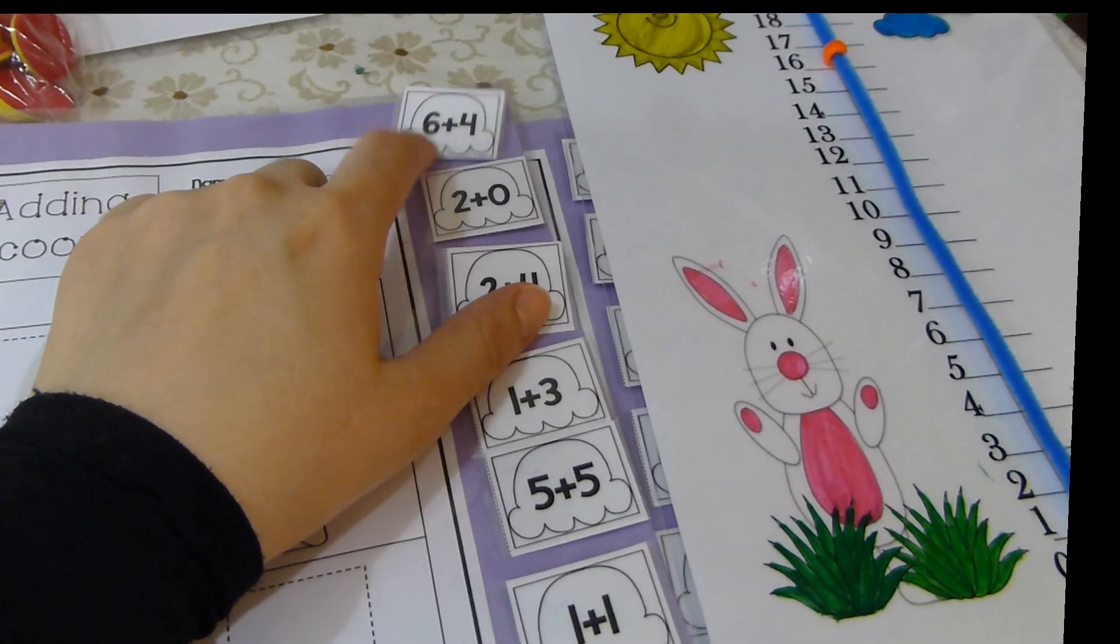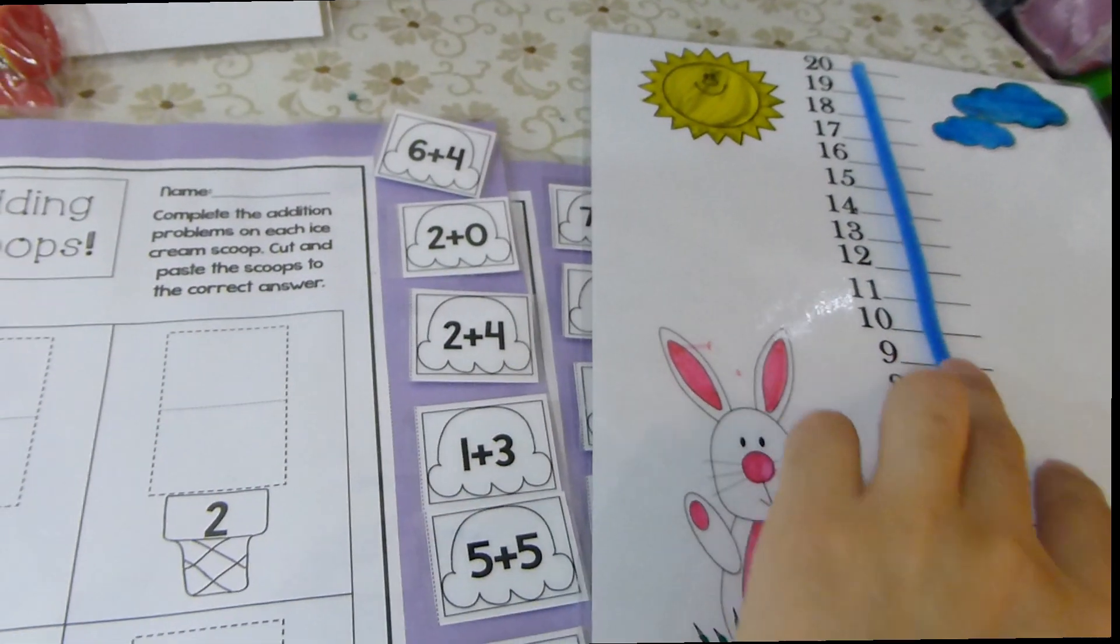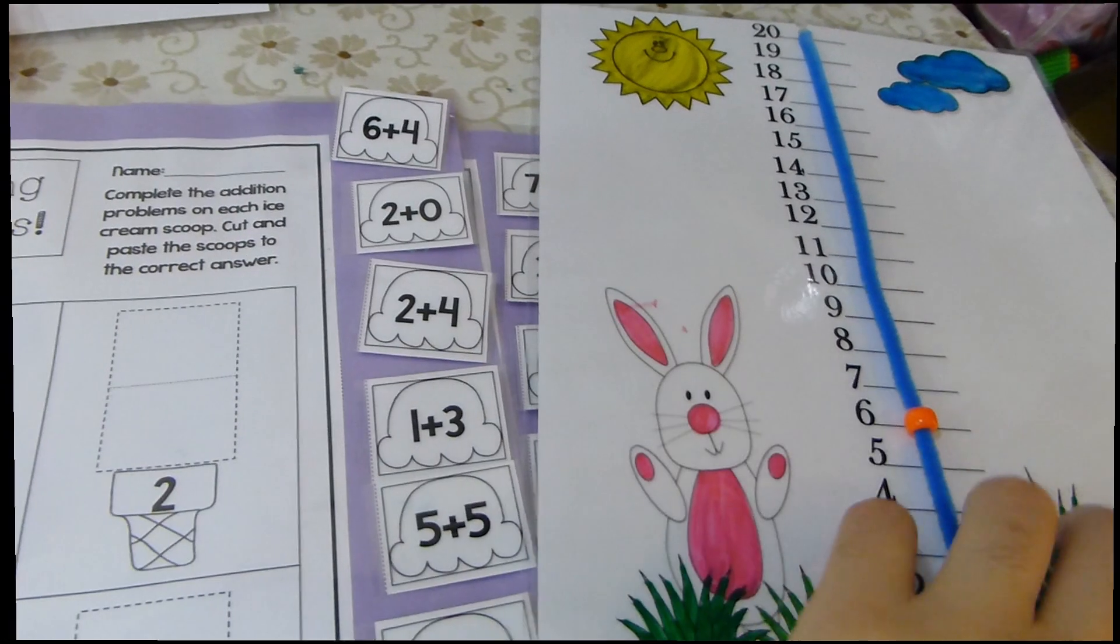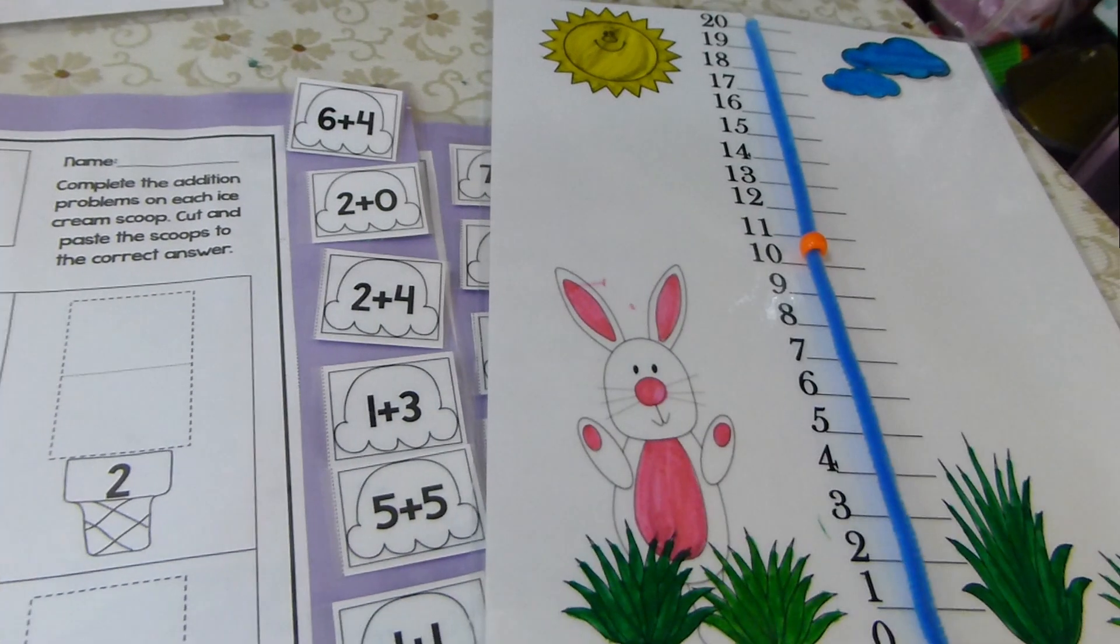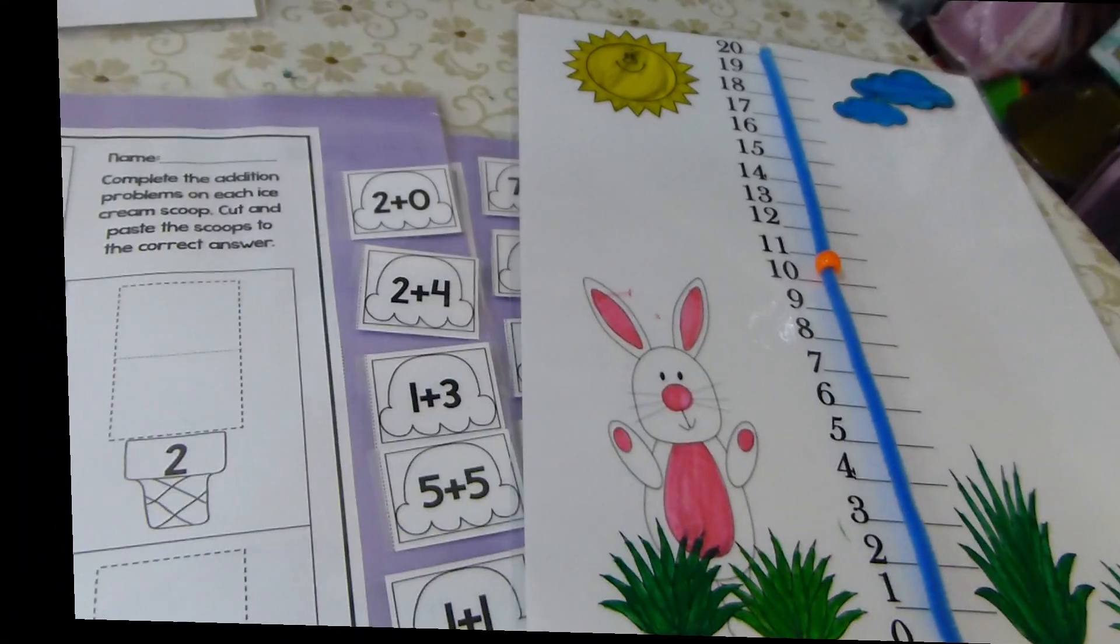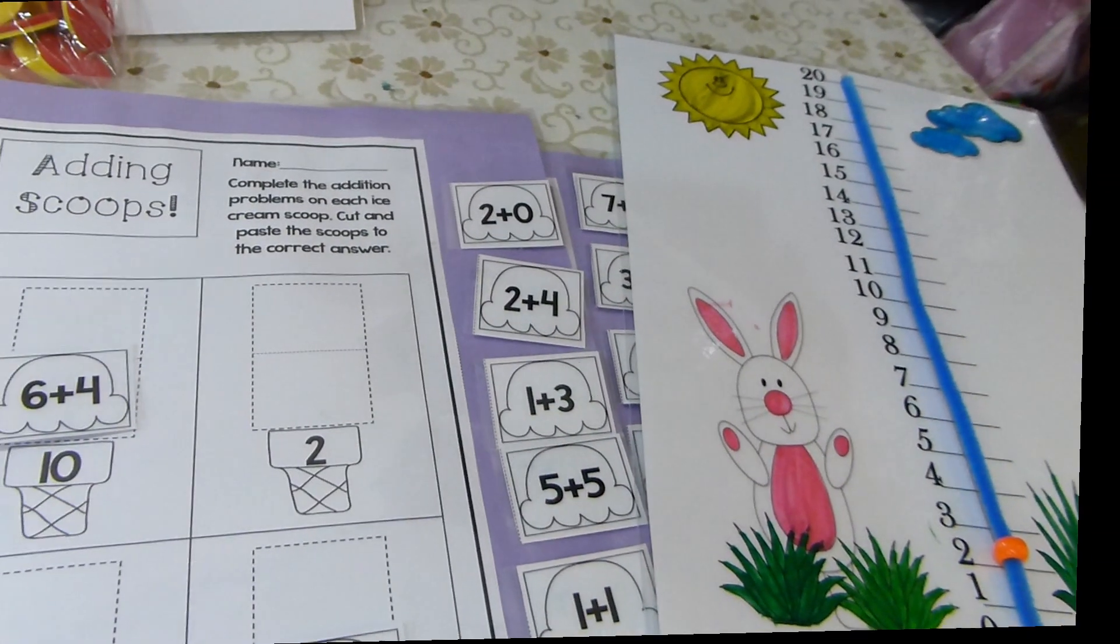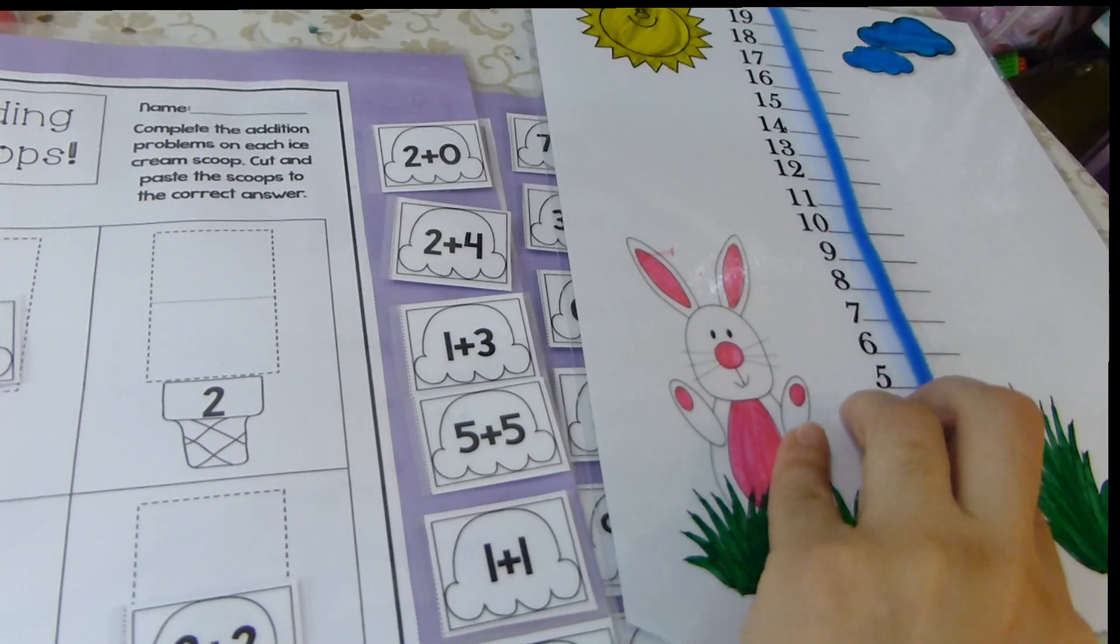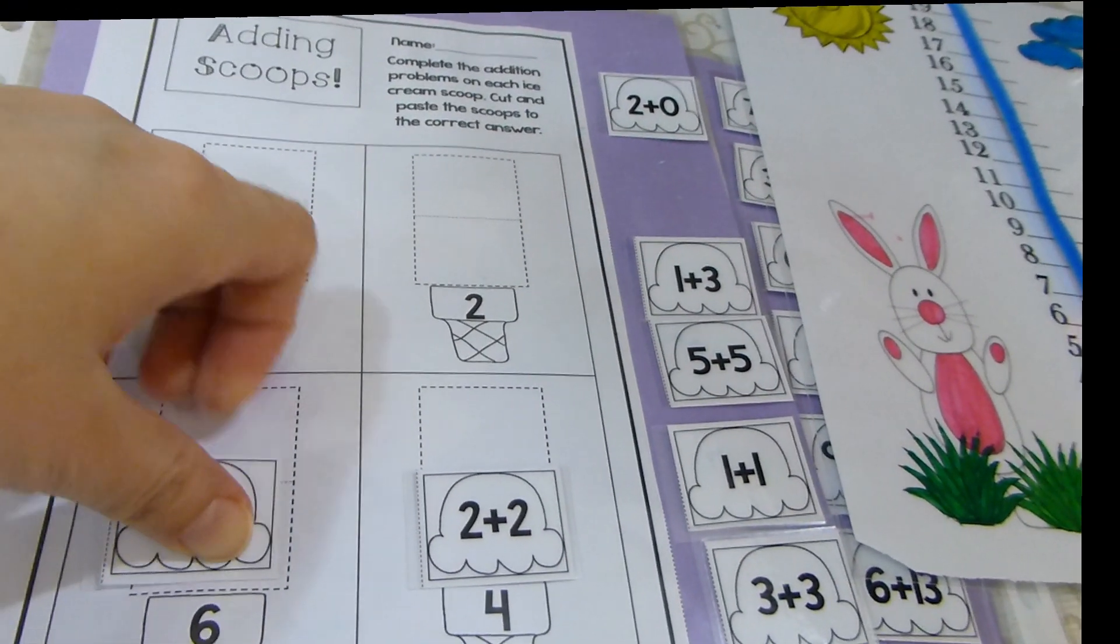Let's read the first equation. The first equation is 6 plus 4. What they will do is bring the bead down to number 6. Here is number 6. And then we need to move forward 4 times. This is 1, 2, 3, 4. So 6 plus 4 equals 10. They will get this scoop and put it on the ice cream over here. The second equation, 2 plus 4. The bead will go down to number 2. Or if it's better, I feel it's better to go to number 4 because this is the bigger number and move 2 times forward. This is number 6.